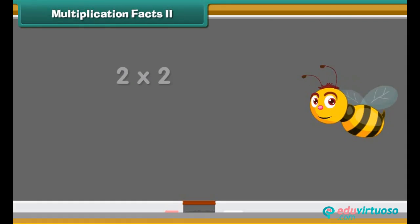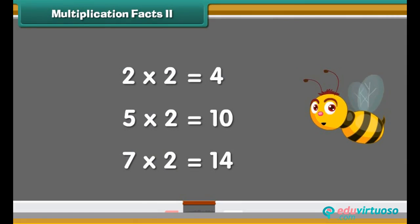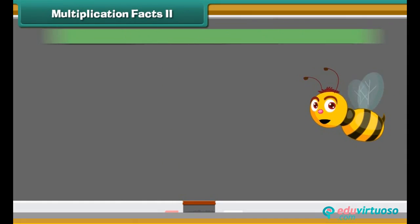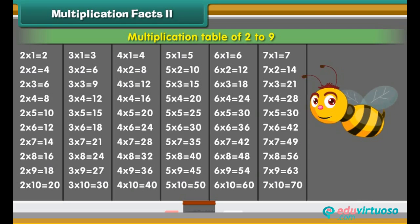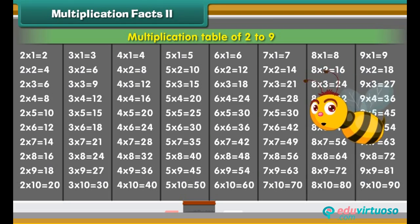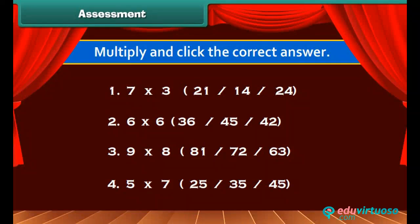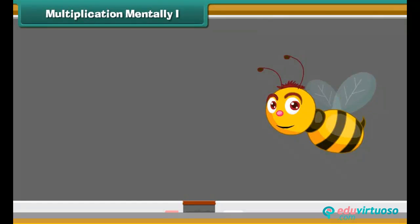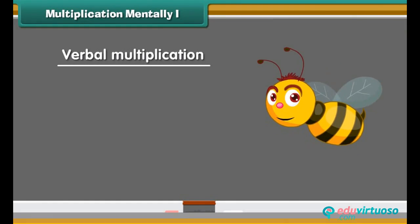The multiplication tables are based on the multiplication facts of different numbers. The multiplication table of 2 to 9 is displayed on the screen. Multiply and click the correct answer. Let us look at some examples of verbal multiplication.